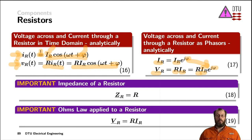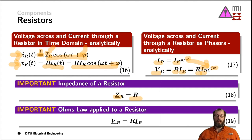The impedance of a resistor — uppercase Z with an underscore and index R — is simply R. So the impedance of a resistor is represented only by a real part and has no imaginary part. The last equation repeats Ohm's law applied to a resistor using phasors: the voltage phasor across the resistor equals the impedance times the current phasor through the resistor.